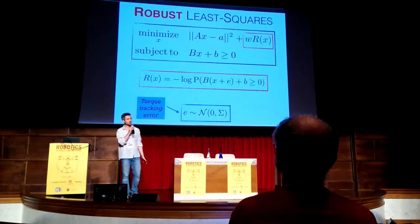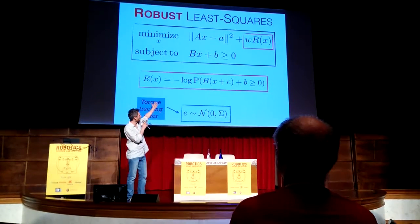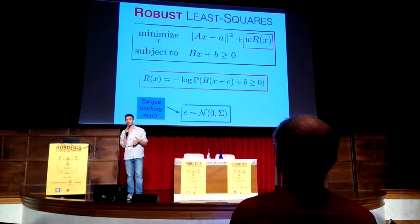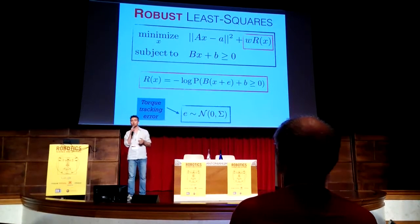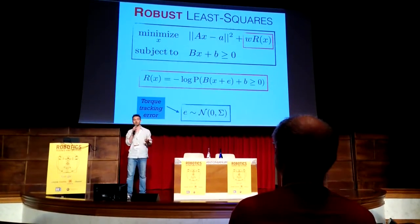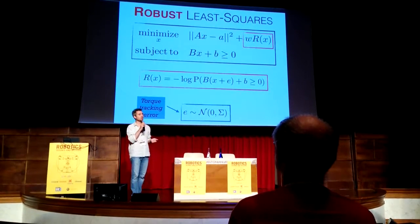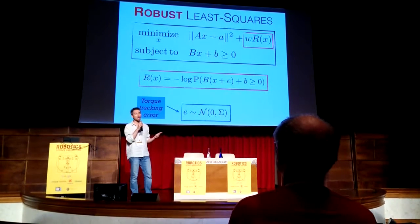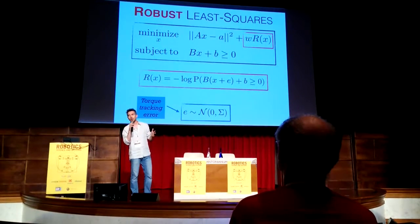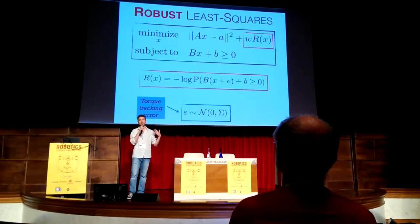The good news is that this new optimization problem is convex and differentiable. The bad news is that computing this probability exactly is too slow for real-time control. That is why in the paper we propose three different ways of approximating this probability that are accurate enough to work well in real time but are much faster.